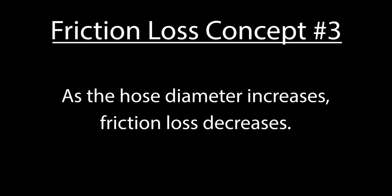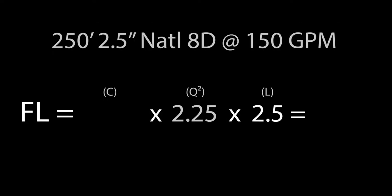The final friction loss concept we will discuss in this video is the third concept, which states that as the diameter of the hose line increases, friction loss decreases exponentially. If we start by looking at flowing the same amount of water, 150 GPM through 250 feet of 2.5 inch hose, our coefficient drops to 2 and our total friction loss drops to 15 PSI, or only 3 PSI per section.